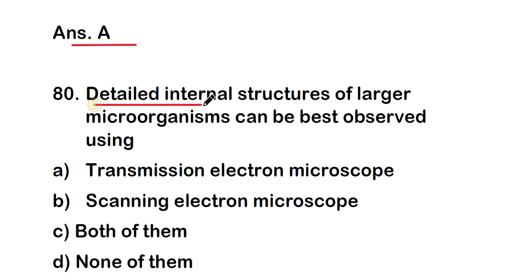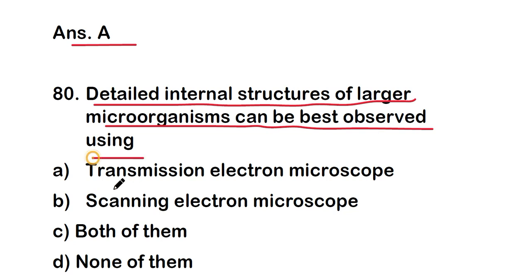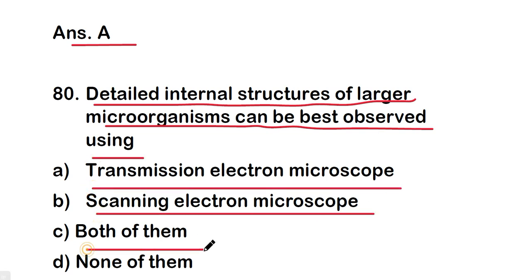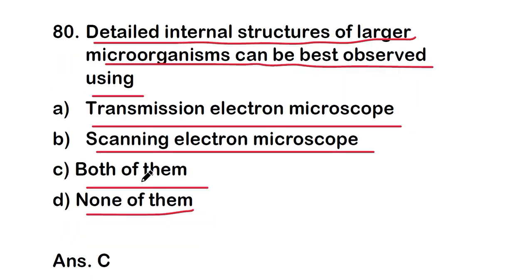The last question: the detailed internal structure of larger microorganisms can be best observed using — transmission electron microscope, scanning electron microscope, both of them, or none of them? The right answer is option C — both can be used for detailed internal structure of larger microorganisms. These are all 20 questions of this video on microscope stain and staining techniques. Thank you for watching.